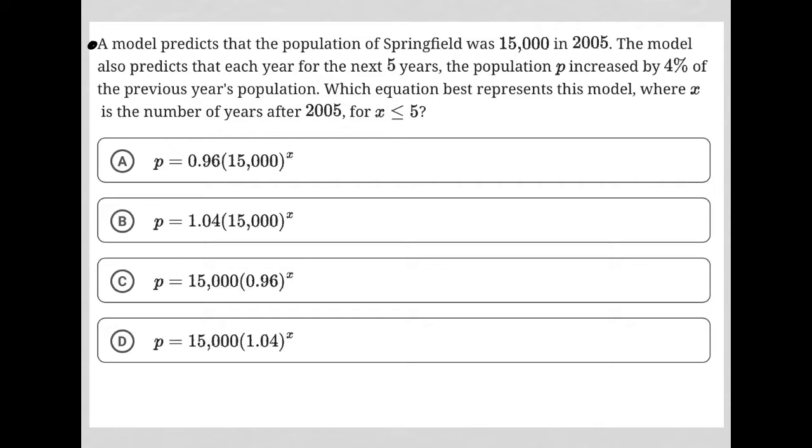So this question says, a model predicts that the population of Springfield was 15,000 in 2005. I always pay attention to the quantitative information in these longer questions.